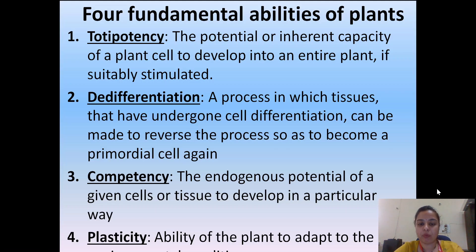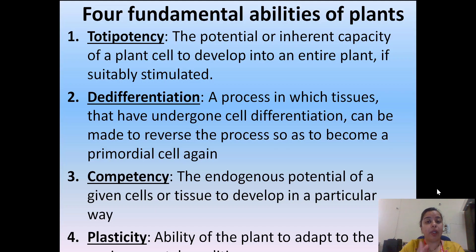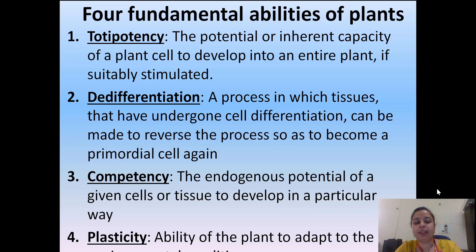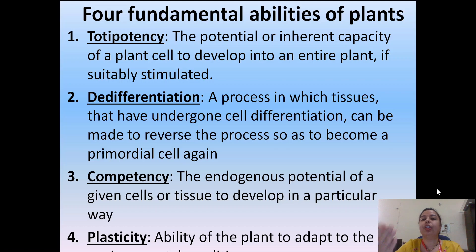Third is competence: the endogenous potential of a given cell or tissue to develop in a particular way. Simply put, it is the genetic ability or genetic code in a plant or cell to grow or reproduce in a particular manner. This is called the competency of the plant.